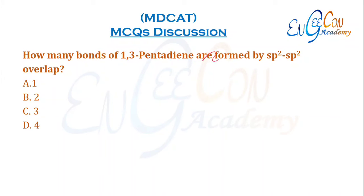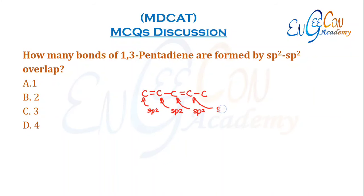How many bonds in 1,3-pentadiene are formed by sp²–sp² overlap? In 1,3-pentadiene, carbons 1, 2, 3, and 4 are sp² hybridized (due to double bonds), while the last carbon (C5) is sp³. Bonds 1, 2, and 3 (the sigma bonds between the sp² carbons) are formed by sp²–sp² overlap, giving 3 such bonds.